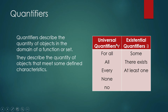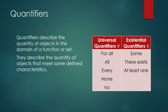This next type is called existential quantifiers, and the symbol for that is like the letter E facing to the left. The phrases that indicate an existential quantifier are: 'some,' 'there exists,' or 'there is.' When we say 'there exists,' that means there is at least one object that meets a certain criteria.